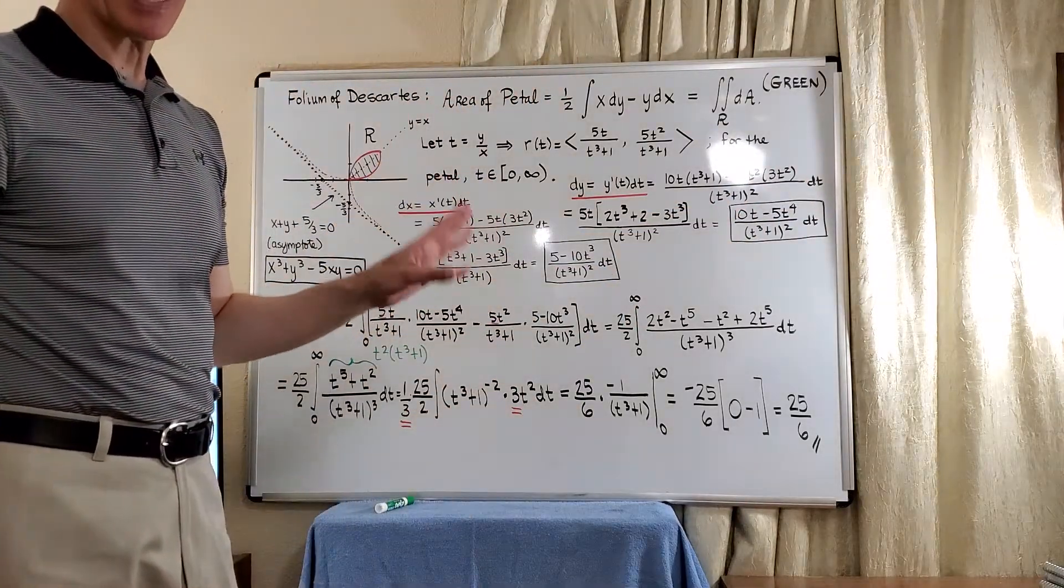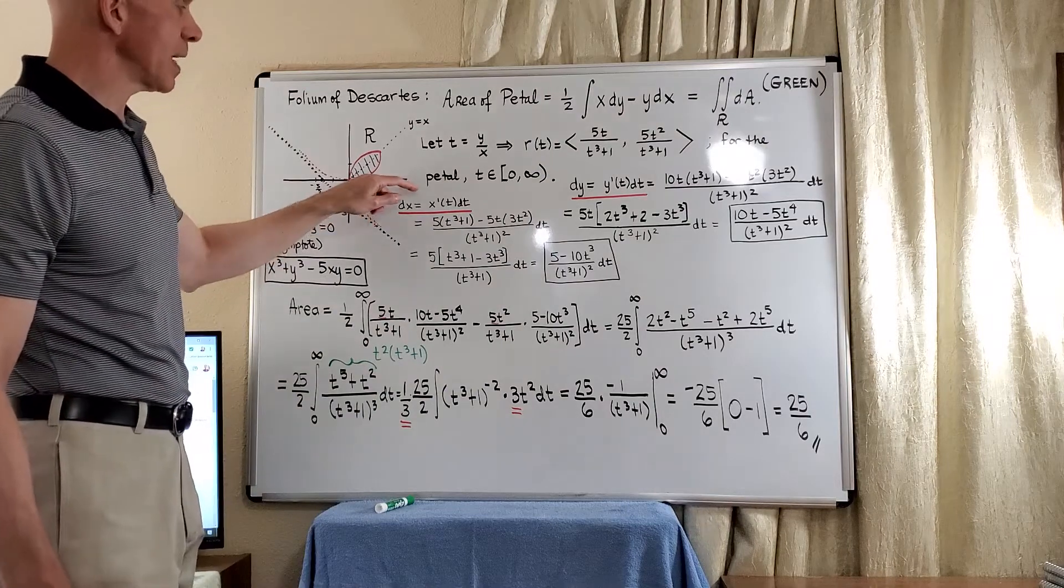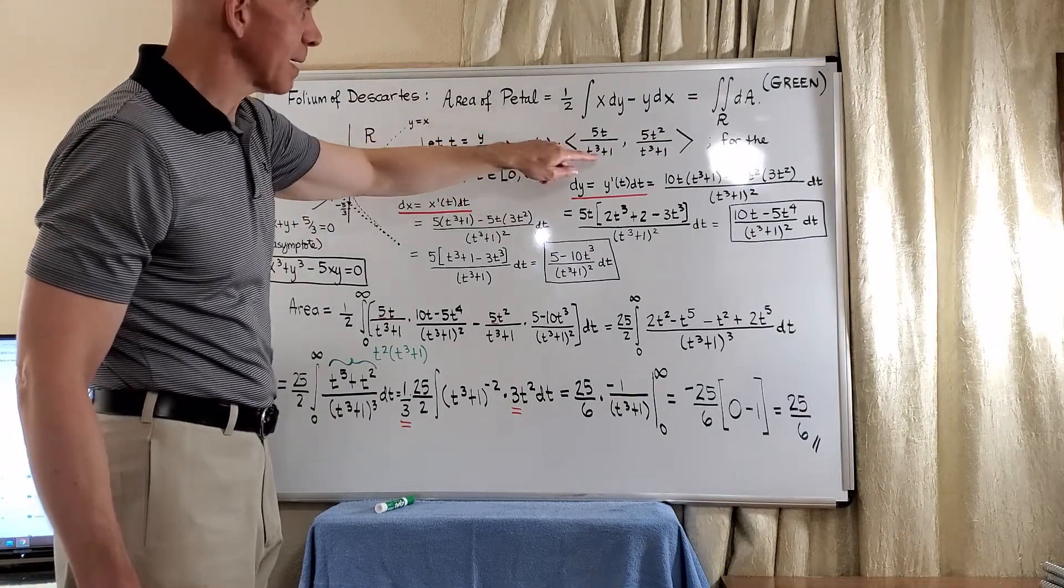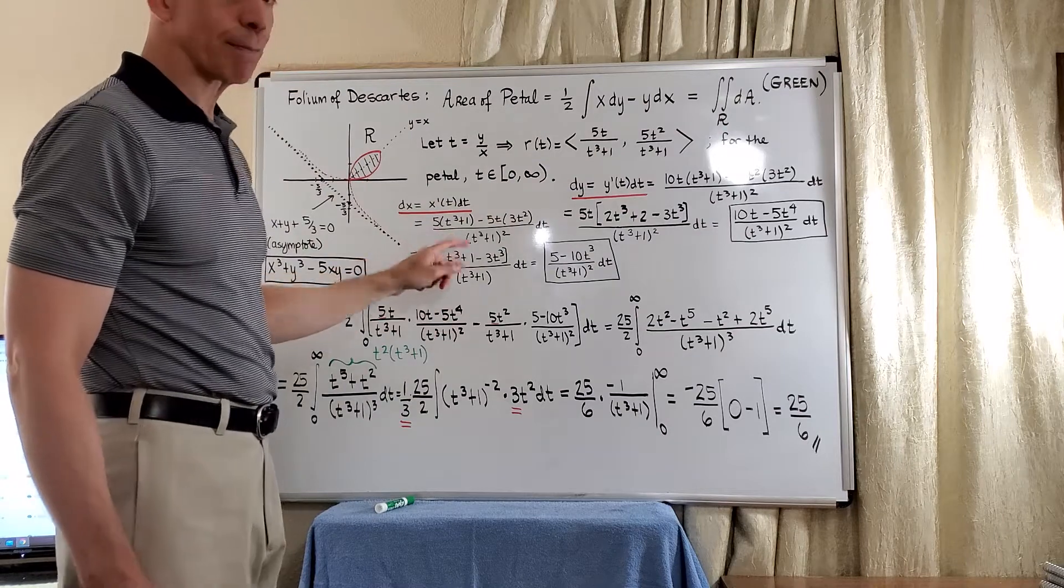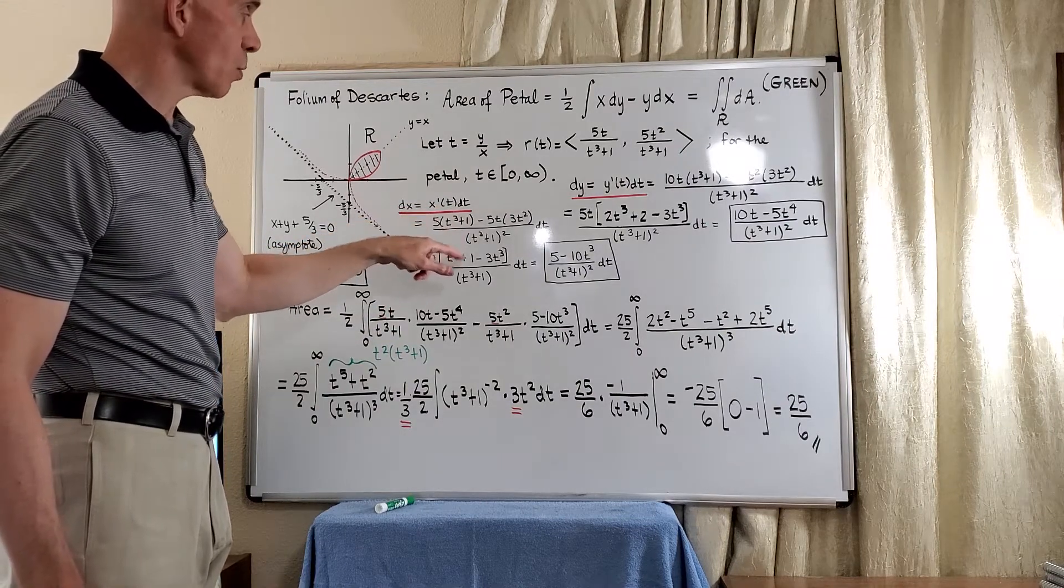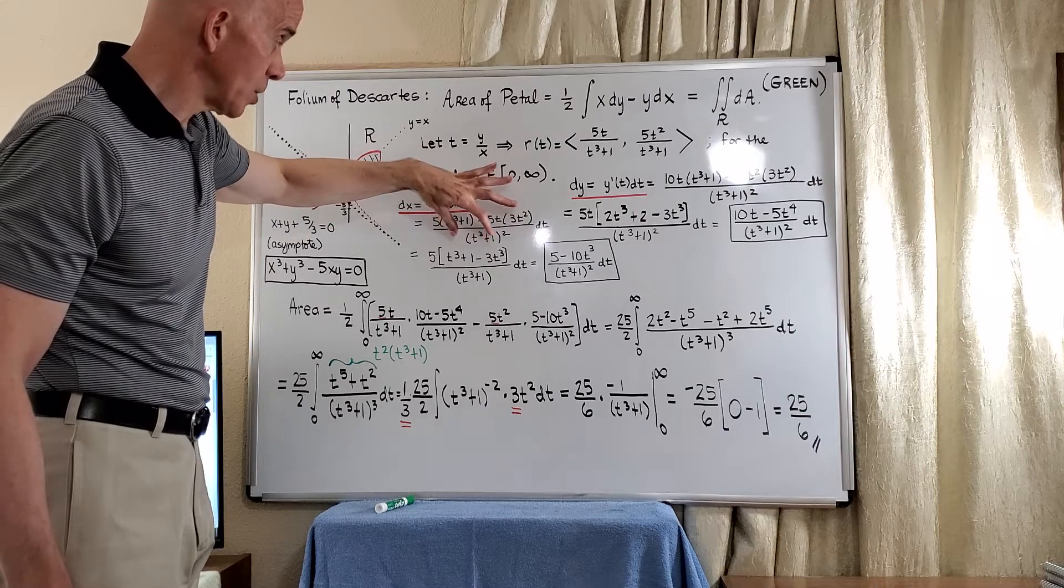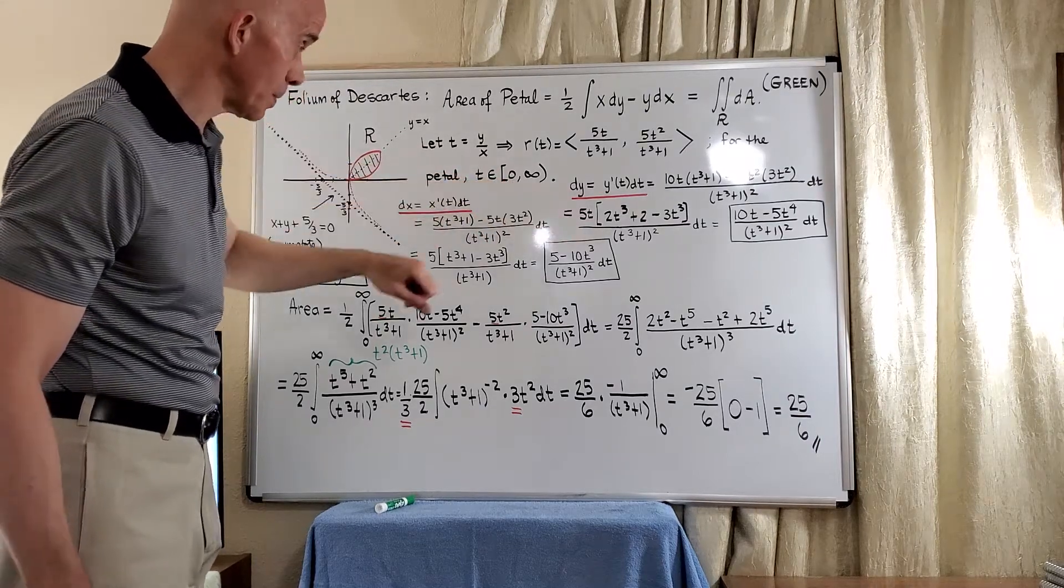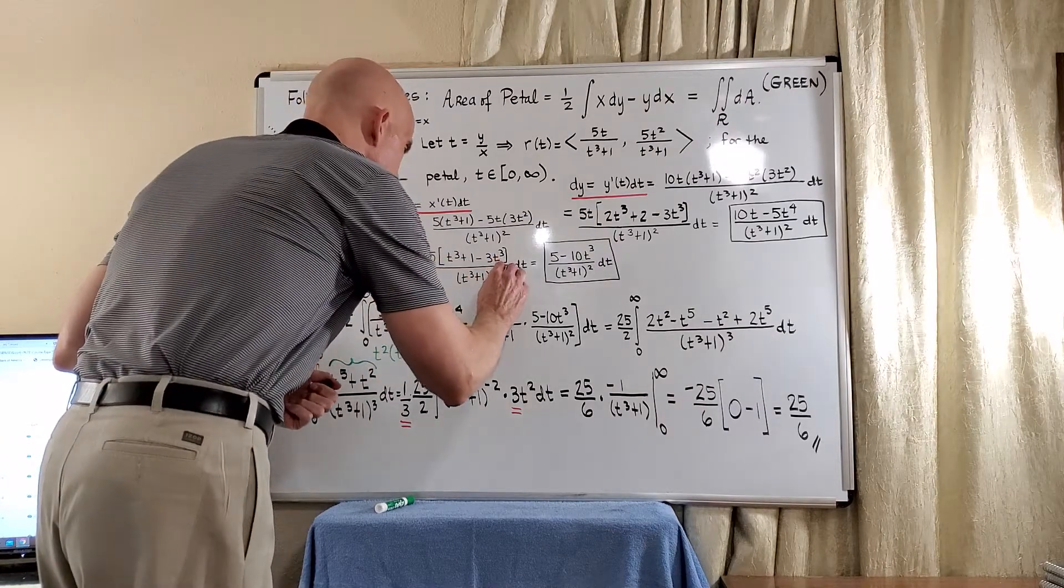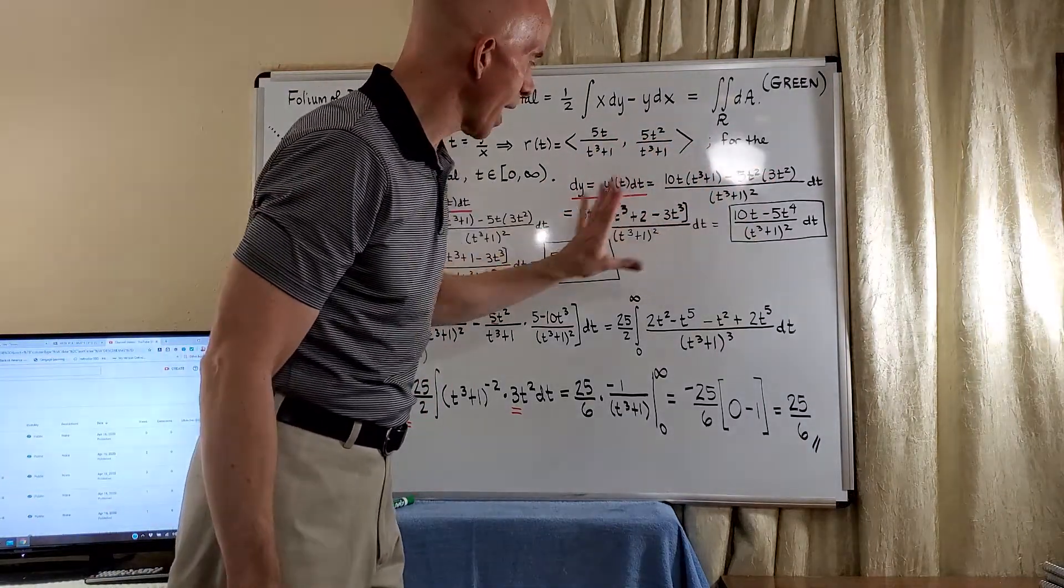Very basic calculus one, but you just have to do the computation. We also need dx. So dx by definition is x prime dt. We're going to have 5 times t cubed plus 1 minus 5t times the derivative here, which is 3t squared, divided by the denominator squared dt. There's a 5 in everything, so that'll leave behind t cubed plus 1, minus 3t cubed. That'll give us negative 2t cubed times 5, giving us negative 10t cubed, and 5 times 1 is 5. So we've got the computation of dy and dx.